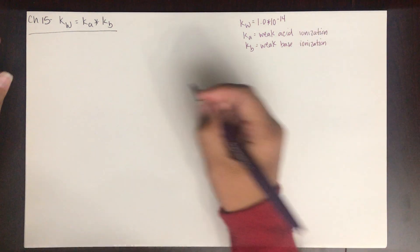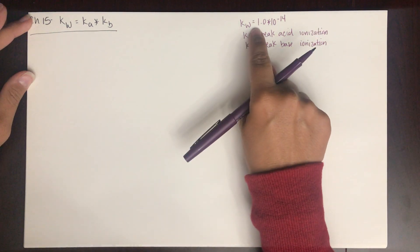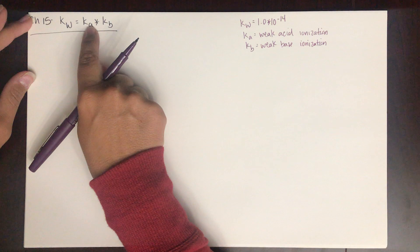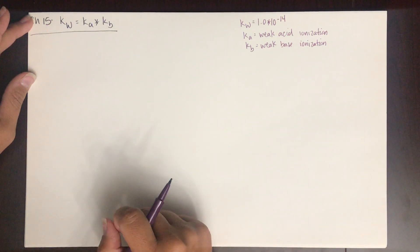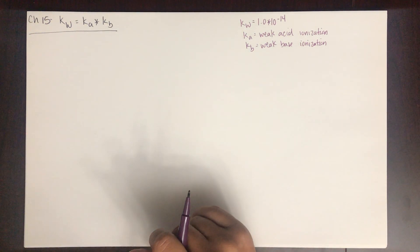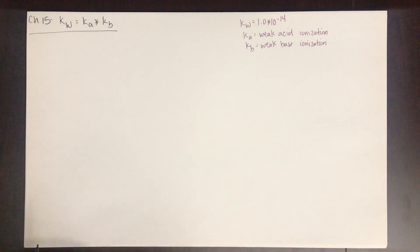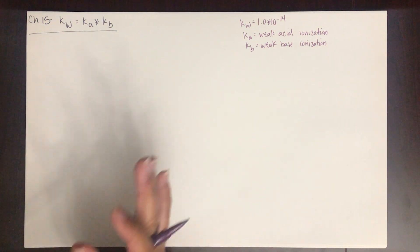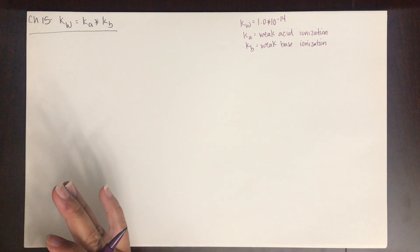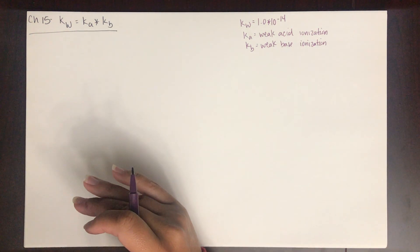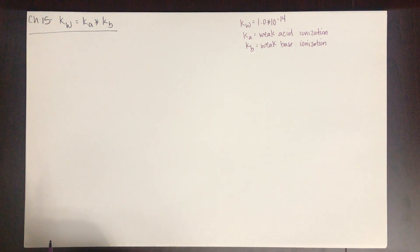What this tells you is that KW is the product of a weak acid and its conjugate base. This is not the product of any random weak acid and any base — the weak acid and its conjugate base, or a weak base and its conjugate acid, are going to have a product of 1 times 10 to the negative 14th. This also tells you that the stronger the acid, the weaker the conjugate base, or the stronger the base, the weaker the conjugate acid, because the product has to equal 1 times 10 to the negative 14th.